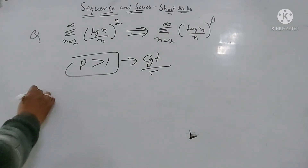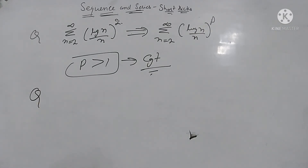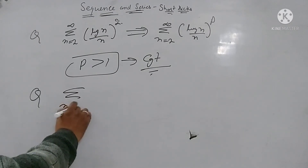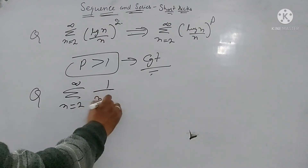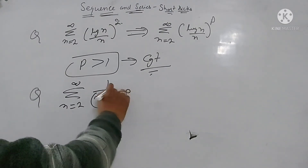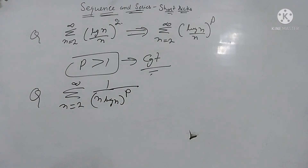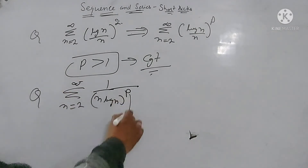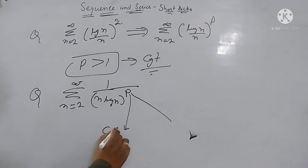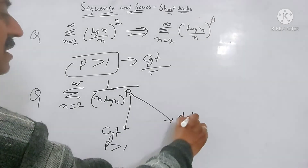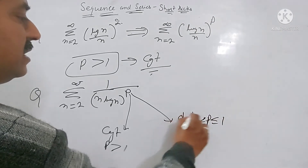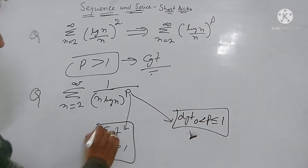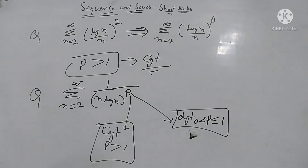Next: summation n varies from 2 to infinity of 1 upon n·(log n)^P. For this series there are two conditions: it is convergent if P is greater than 1, and divergent if P is greater than 0 and less than or equal to 1. Thank you very much.